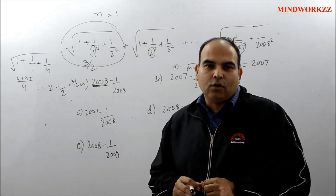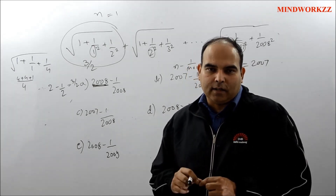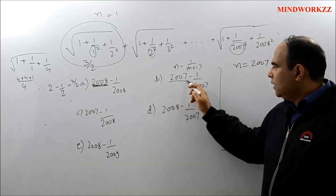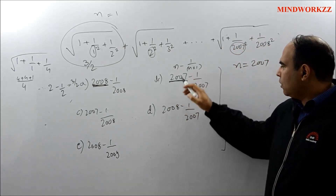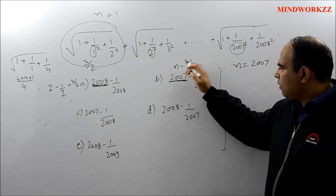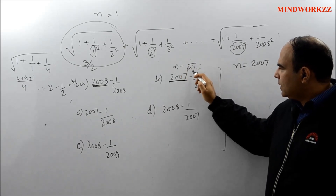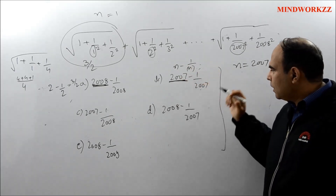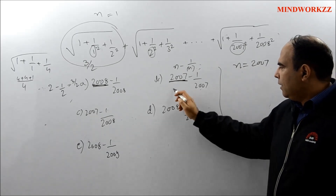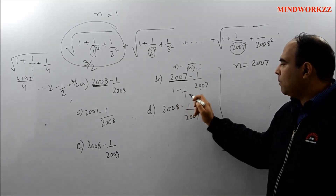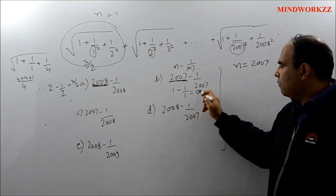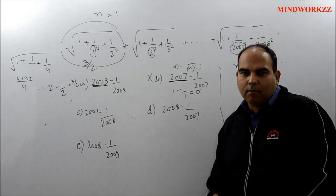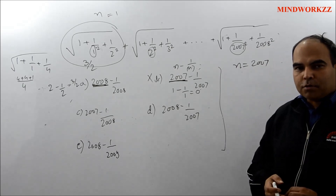Going to Option B: with n = 2007, this option represents n − 1/(n+1), and with n = 1 this becomes 1 − 1/2 which is... wait — more directly, with n = 1 this gives 1 − 1 = 0, which removes Option B as a possible answer.